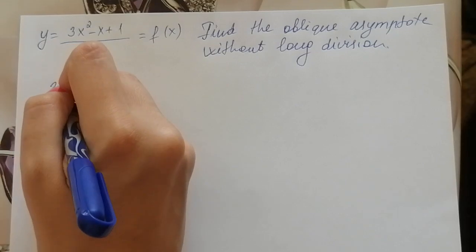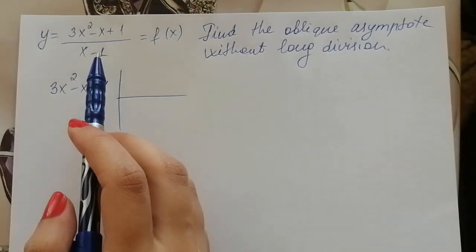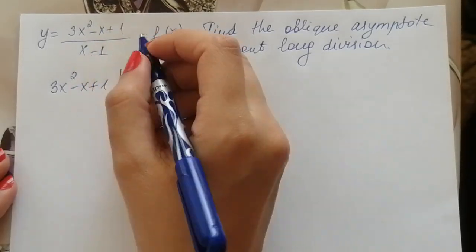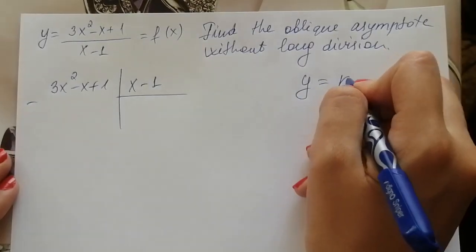By long division you divide the numerator by denominator and you find the oblique asymptote.